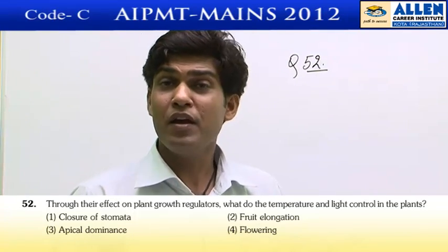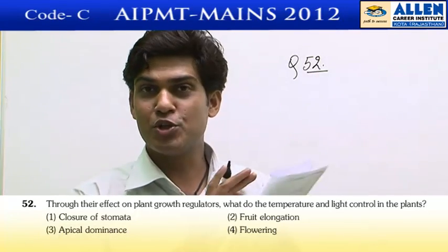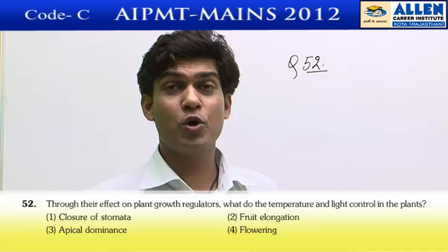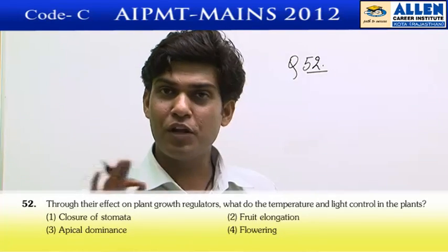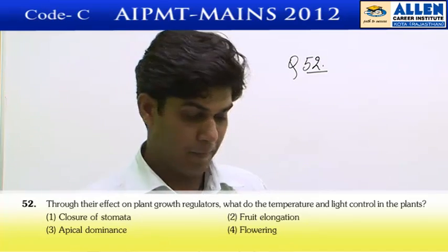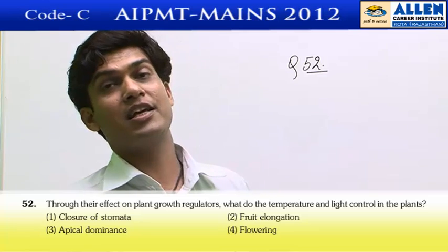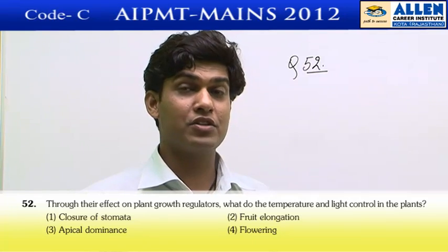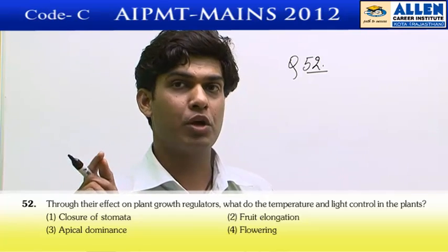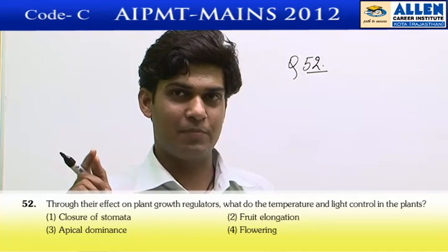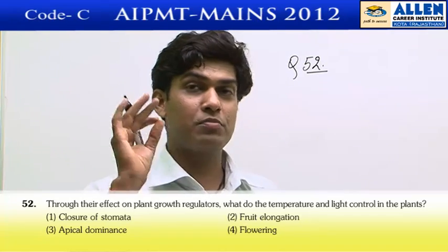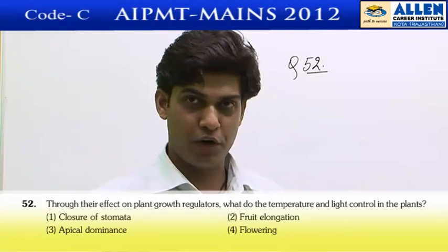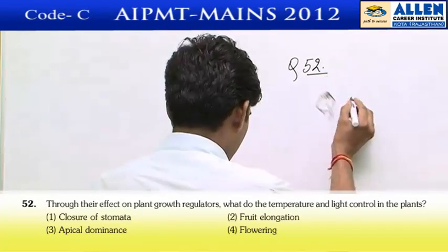Fruit elongation is solely dependent on growth regulation with no impact from environmental factors. Apical dominance is also a sole phenomenon of growth regulators and is not influenced by any external environmental factor. The fourth option is flowering — we know the flowering phenomenon is governed by temperature and the relative duration of light and dark hours, which show their impact via plant growth regulators, as discussed in the florigen concept. So the answer is option 4.